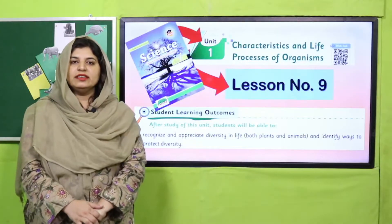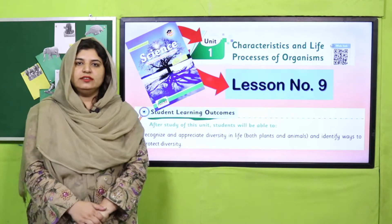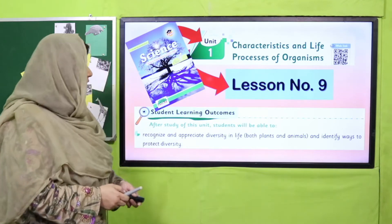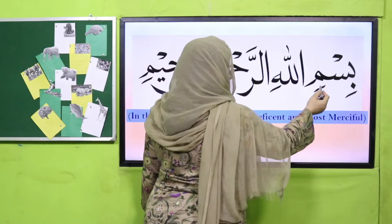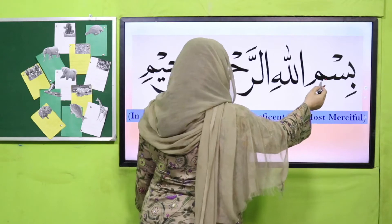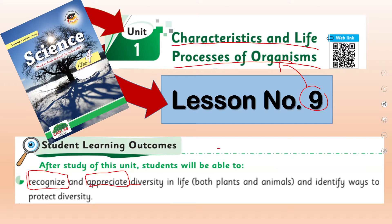Bismillahirrahmanirrahim, Assalamualaikum. We are going to study our Cambridge Scholar Series Science Grade 4, and today we are going to start our lesson number 9 from unit number 1. The unit name is 'Characteristics and Life Processes of Living Organisms.' The SLO we are going to address today is to recognize and appreciate diversity in life, both in the case of plants and animals, and we will identify the ways to protect biodiversity.